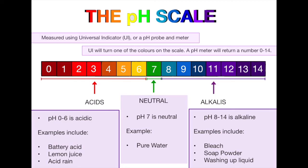Examples of different acids include battery acid, lemon juice and acid rain. Examples of alkalis include bleach, soap powder and washing up liquid. I would definitely recommend remembering at least three examples of each of those. The only real example of a neutral substance is pure water — that's all you really need to remember.